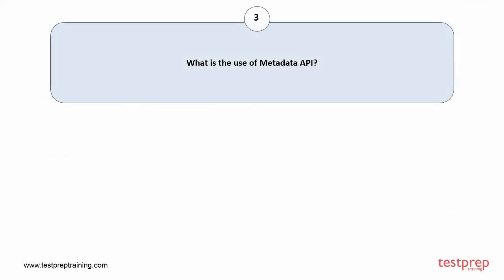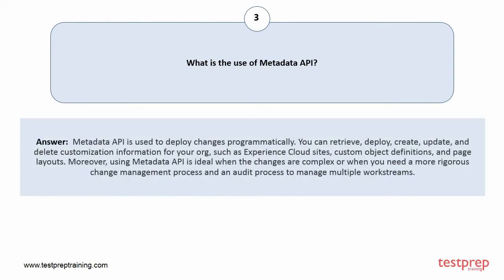Question number three: what is the use of metadata API? Metadata API is used to deploy changes programmatically. You can retrieve, deploy, create, update, and delete customization information for your org, such as experience cloud sites, custom object definitions, and page layouts. Moreover, using metadata API is ideal when the changes are complex or when you need a more rigorous change management process and an audit process to manage multiple work streams.